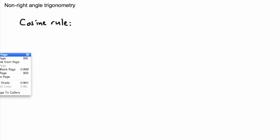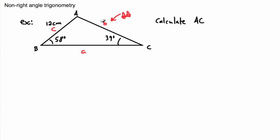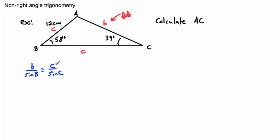Using sine law: b over sine B equals c over sine C. So that's b over sine 58 equals 12 over sine 39. I just need to use two of the three ratios. To isolate b, I multiply both sides by sine 58, giving b equals 12 times sine 58 degrees, all divided by sine 39 degrees.